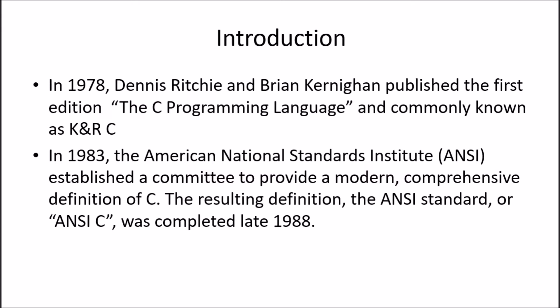In 1978, Dennis Ritchie and Brian Kernighan published the first edition, named 'The C Programming Language,' commonly known as K&R C. C was not the normal standard C earlier — it was K&R C, because K and R were taken from Kernighan and Ritchie.